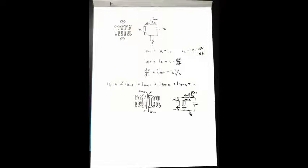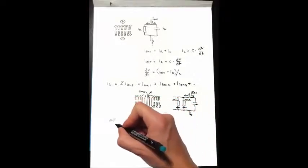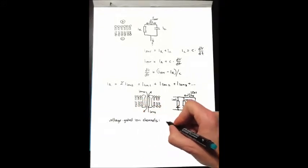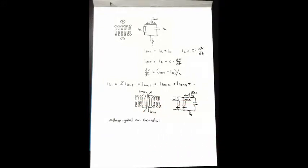Before I get there, we have to understand that most ionic currents are not simple. They are created by channels that are voltage dependent, which means they open and close depending on the membrane potential. So we can say that the current through these channels depends on the voltage.